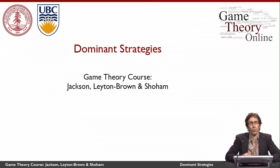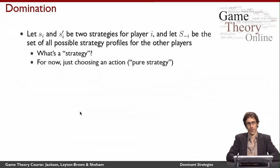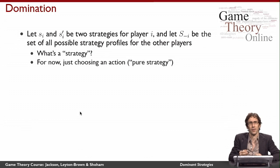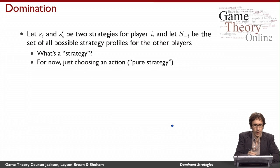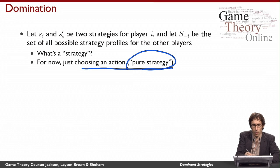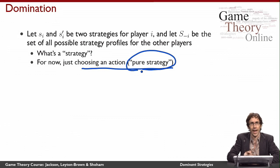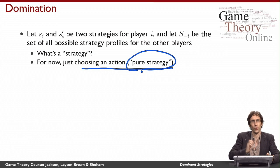This video is going to describe an important property that some games have, which is called dominant strategies. To begin with, I'm going to start using the word 'strategy' that we haven't defined yet. When I use the word strategy, I want you to understand it to mean choosing some action. This will eventually be called a pure strategy, and there's another kind of strategy that everything in this lecture also applies to, but it doesn't matter for now. So let's just understand strategy to mean choice of action.